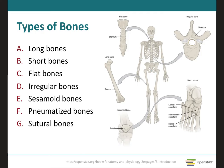We can separate bones into seven different categories: long bones, short bones, flat bones, irregular, sesamoid, pneumatized, and sutural bones. The most common types are the first five, but there are two other types that are sometimes not mentioned — we will cover all of them in the next slides.